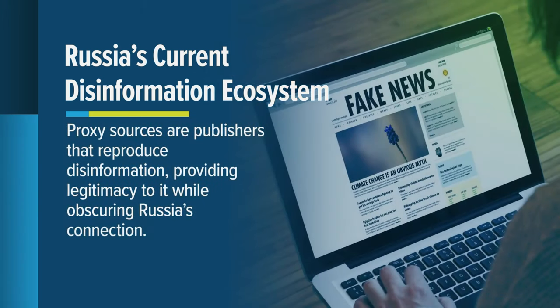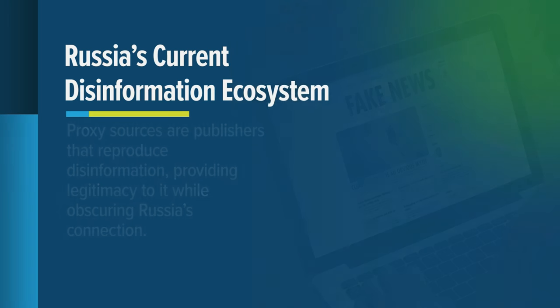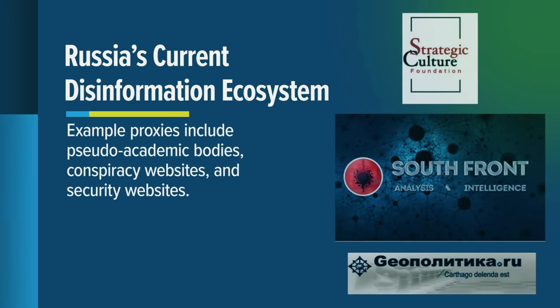The third pillar, proxy sources, are publishers that produce or reproduce disinformation. These sources provide legitimacy to disinformation and obscure the government's connection to the material. They are typically internationally available Russia-aligned outlets or local language-specific outlets that amplify Russian narratives. Proxies often use local or Western authors to further obscure their Russian connections. Examples include pseudo-academic bodies like the Strategic Culture Foundation, Katehon, and New Eastern Outlook; conspiracy websites like Canada-based Global Research; and security websites Southfront and Geopolitica.ru.